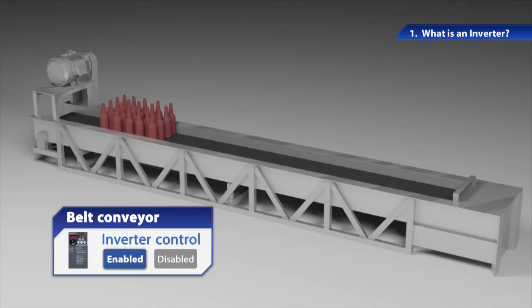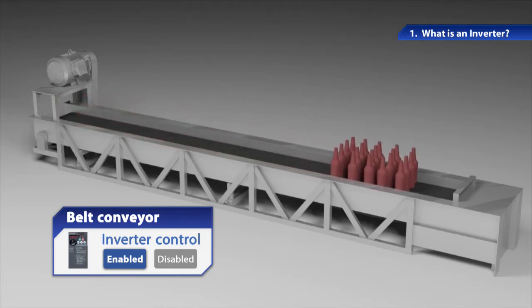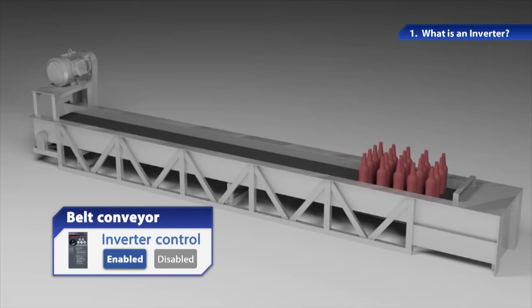When the motor is switched on, it starts running slowly to carry the work. The work stays standing and does not fall over or drop from the belt.